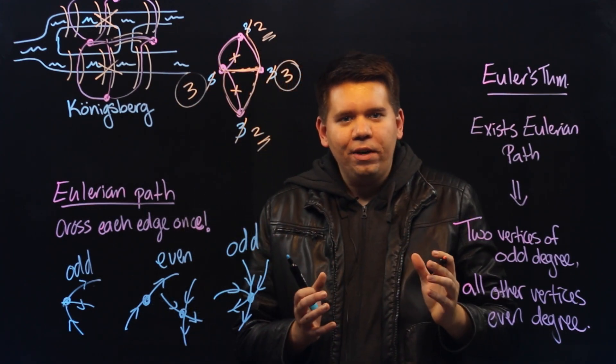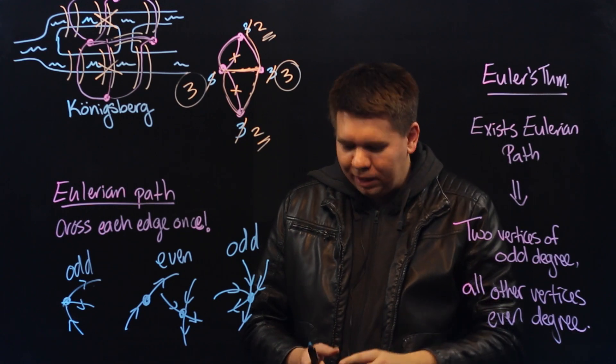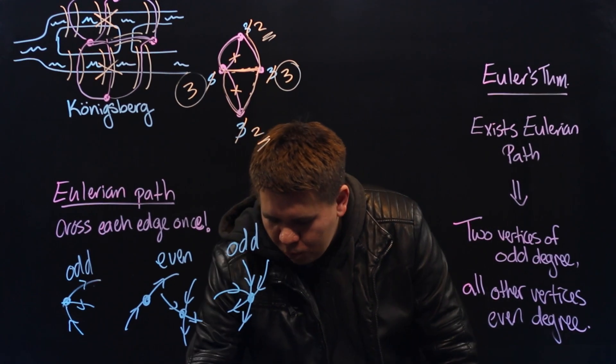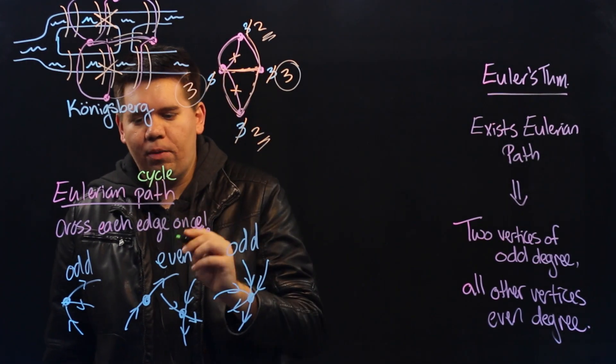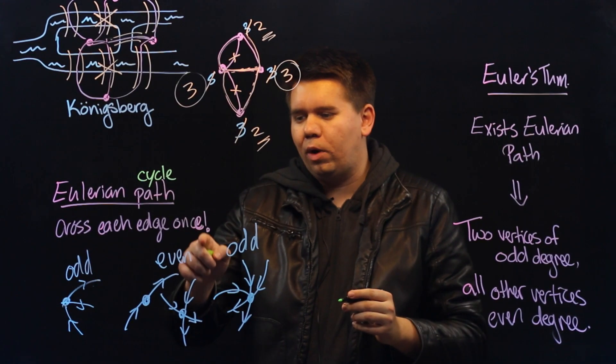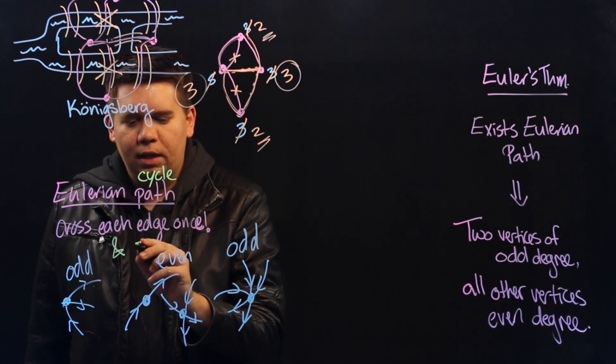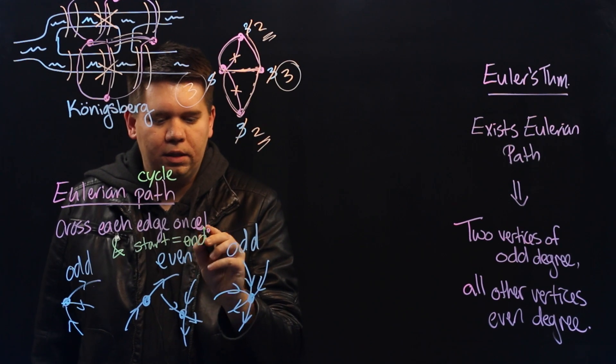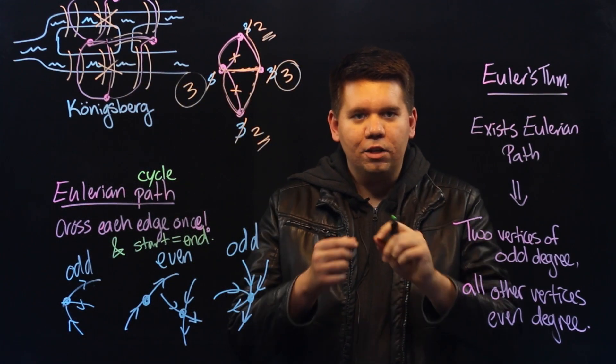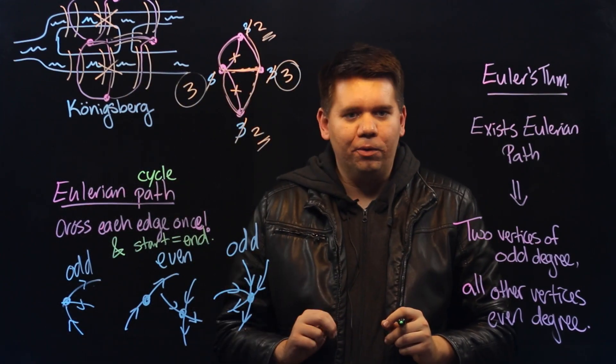There's a variant of an Eulerian path called an Eulerian cycle. And what Eulerian cycle requires is not just that you have a path across each edge once, but you also add the requirement that you start and finish at the same point, turning the path into a loop or a cycle.